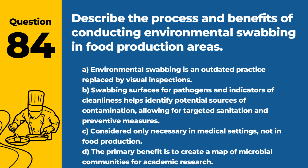Question 84. Describe the process and benefits of conducting environmental swabbing in food production areas. a. Environmental swabbing is an outdated practice replaced by visual inspections. b. Swabbing surfaces for pathogens and indicators of cleanliness helps identify potential sources of contamination, allowing for targeted sanitation and preventive measures. c. Considered only necessary in medical settings, not in food production. d. The primary benefit is to create a map of microbial communities for academic research. Answer: b. Swabbing surfaces for pathogens and indicators of cleanliness helps identify potential sources of contamination, allowing for targeted sanitation and preventive measures. Environmental swabbing is a critical component of a proactive food safety program.